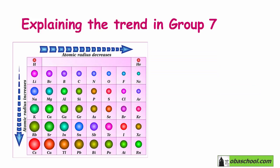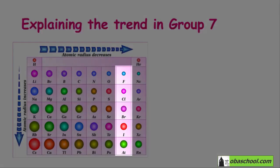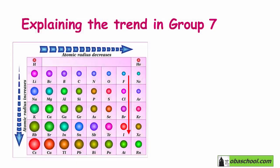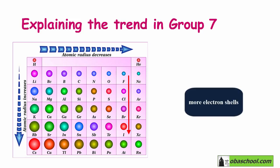As we move down the group, the size of the atom increases, and this is because as we move down the group we will add one more electron shell. So the atom will become larger.